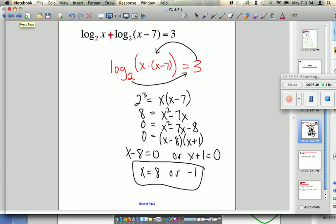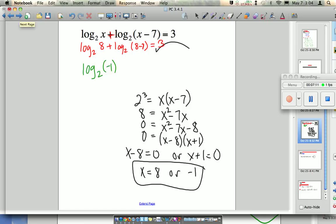If you're not entirely sure, you can always plug things back in. Log base 2 of 8. Log base 2 of 8 minus 7. Ask yourself, is that equal to 3? Hopefully you know some basic facts about 2. These are all nice numbers. Now, we also want to check the other answer, negative 1. Let's see, log base 2 of negative 1. Uh-oh. There is no such thing. I can't take the log base 2 and get a negative number. So this is not a solution. The only solution is 8.